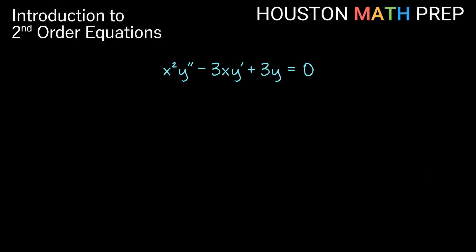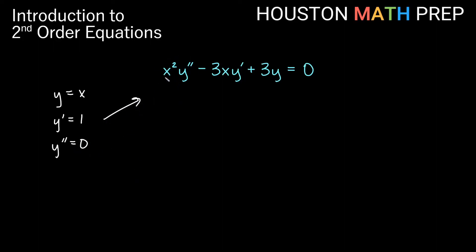We will show different ways of solving different types of second order equations, but let's look at a couple of solutions for this particular equation. If y equals x is a solution, we need to plug into the equation and get a true statement. With y = x, y prime = 1, and y double prime = 0. Plugging in: x squared times 0 gives 0, minus 3x times 1 gives negative 3x, plus 3 times x gives 3x. That equals 0 — a true statement, so y equals x is indeed a solution.